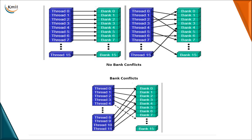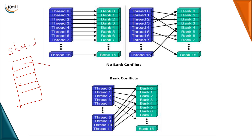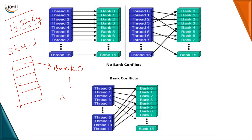When looking at shared memory as a block, it is divided into partitions called banks. Banks are numbered from 0 to 15 in this example, meaning shared memory is divided into 16 banks. The total available memory should be divided in multiples of 16, 32, or 64. In the case of sequential access — for example, thread 0 accessing bank 0, thread 7 accessing bank 7 — there is no bank conflict.